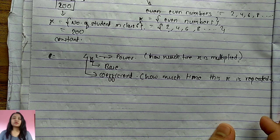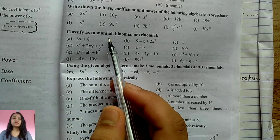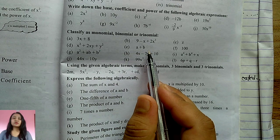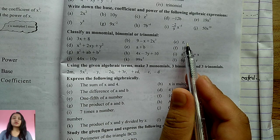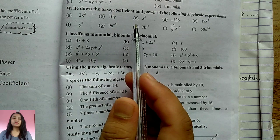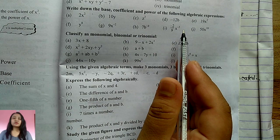Now you can classify expressions: if there are two terms, it's a binomial; three terms, a trinomial; one term, a monomial. For example, for a term like −(2/9)x⁻⁵, the coefficient is −2/9, the base is x, and the power is −5.